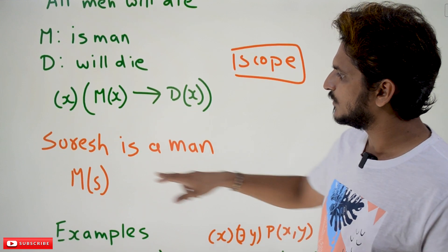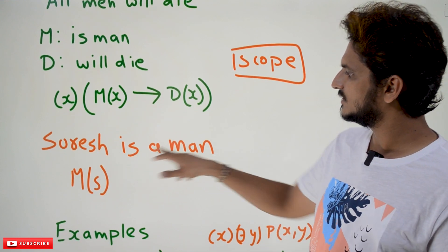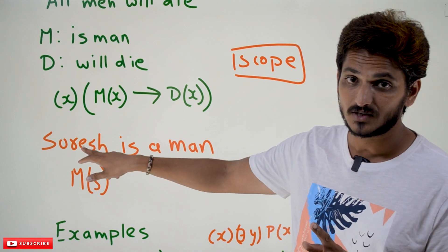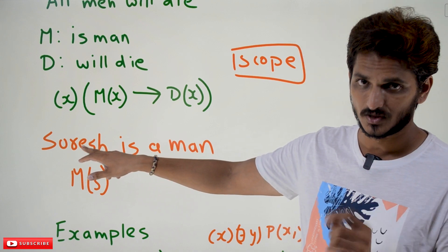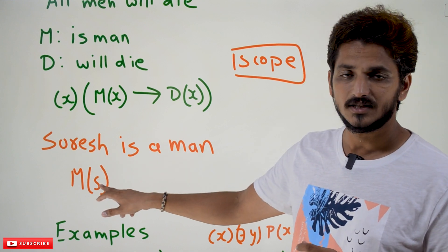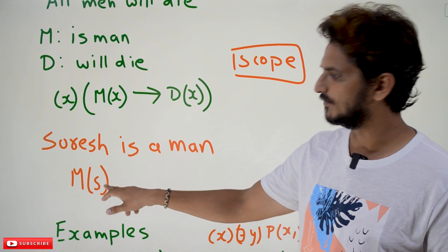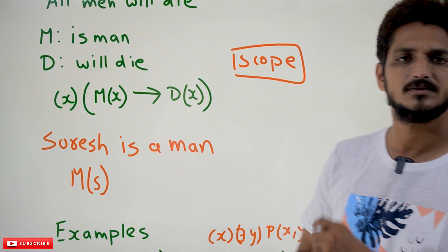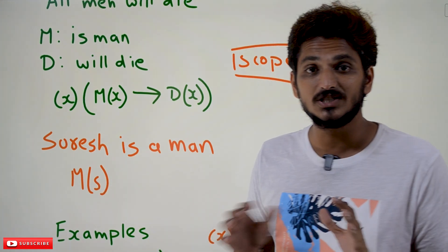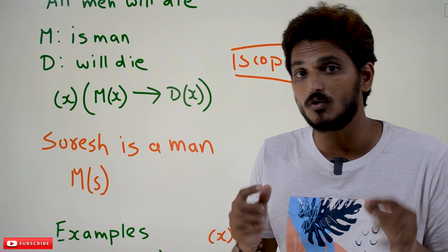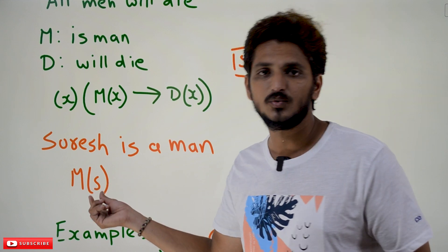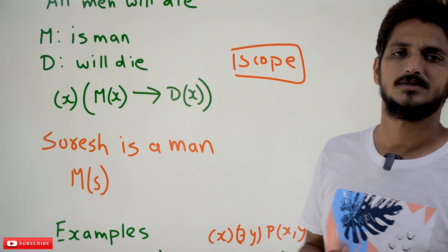Let's take one more example: Suresh is a man. Suresh is the subject — we give a variable name to the subject Suresh, we name it as s. So this statement can be written as M(s). Here s is a variable which is not bounded by any of the quantifiers.